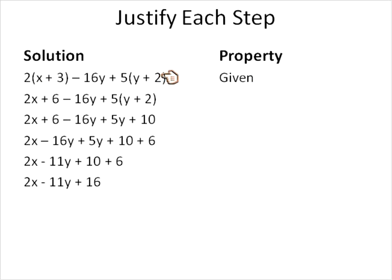Then we look at, from the first step to the second step, what has changed? What have we done? Well, this didn't change, the 5 times y plus 2, 16y, negative 16y there didn't change. But this whole section did. What happened was we multiplied 2 times x and 2 times 3. 2 times x is 2x. 2 times 3 is 6. And that is called the distributive property. We distributed that 2 to each term inside of the parentheses. So that's what changed between step 1 and 2. So that's what we write down as our justification for that step.